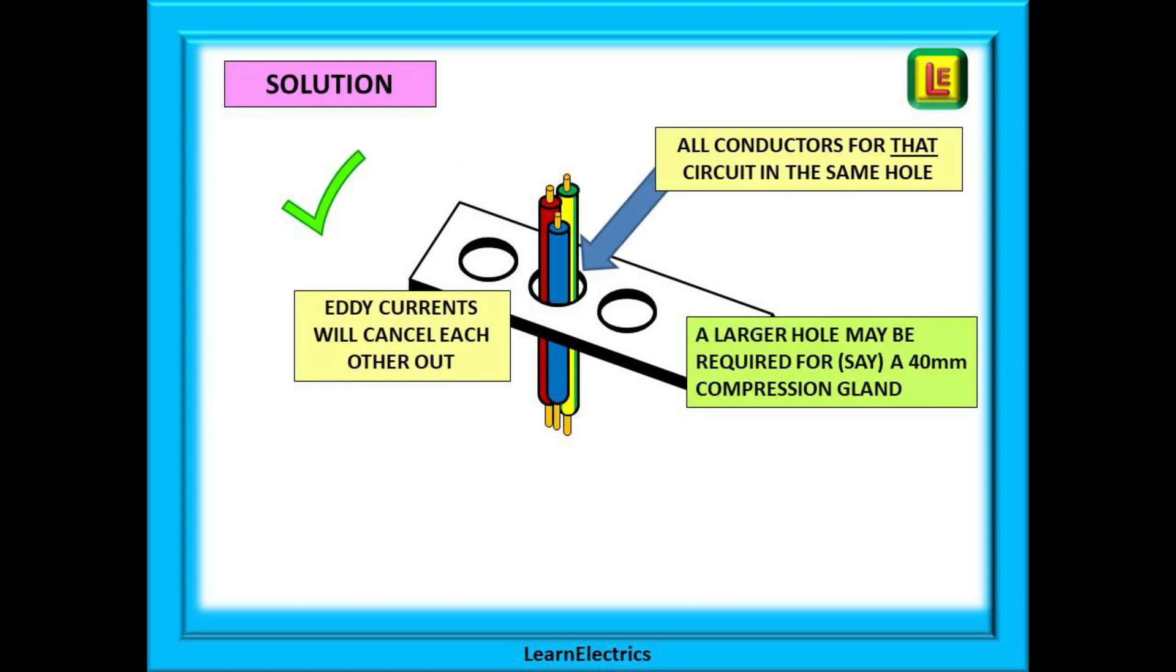The solution, and the regulations say that we should always do it this way, is to install all the conductors for a circuit through the same hole in any ferromagnetic enclosure.